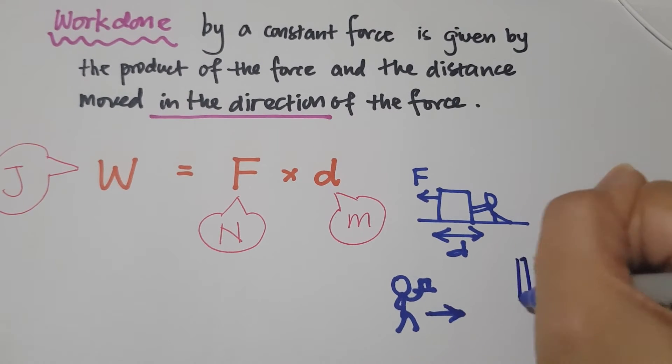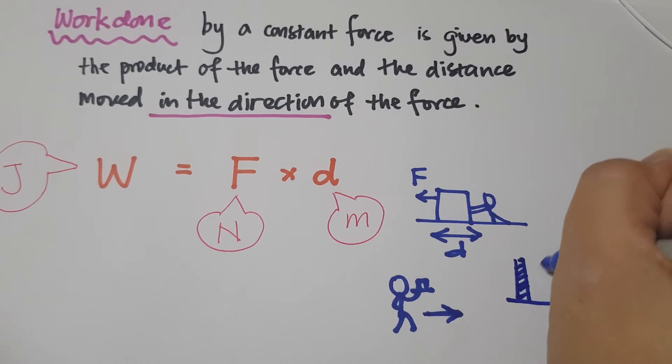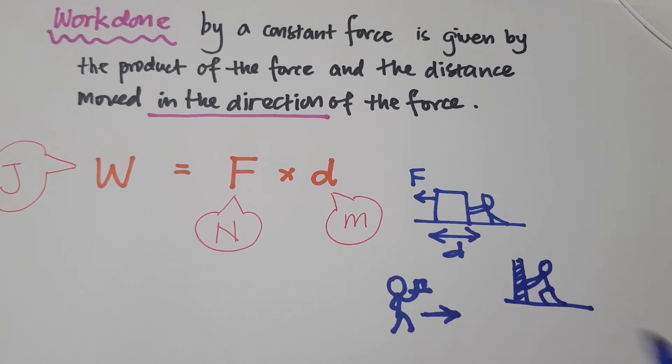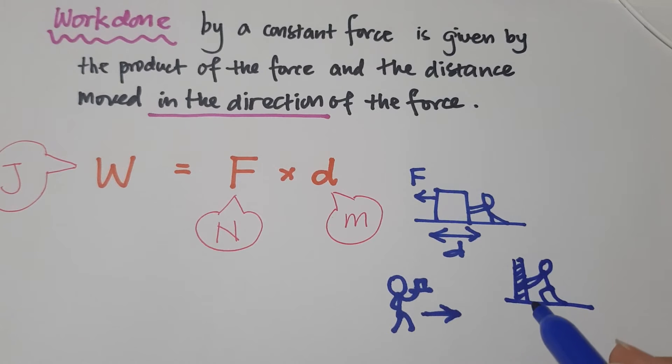Another example. If this is a wall and someone is pushing on it, imagine you are pushing very hard against this wall. However, the wall does not move. So is there work done on the wall? No, there isn't because there is no distance moved by the wall at all. The distance will be zero in this case because it has not moved at all. So in this case, the work done is zero.